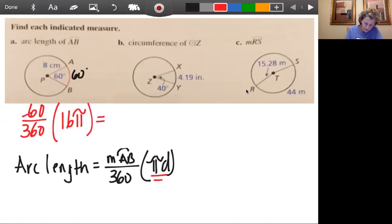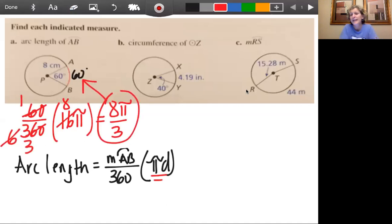We already talked about that 60 goes into itself once and 60 goes into 360 six times. And then I can further simplify because two goes into six three times and two goes into 16 eight times. So I end up with eight pi over three for this answer of length. And if it asks for the decimal, then you can plug that into your calculator. Eight times pi divided by three.